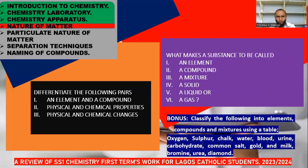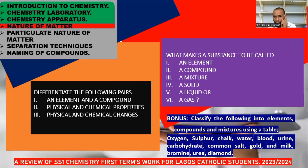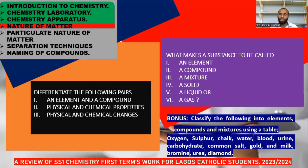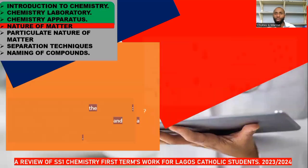Can you classify the following into elements, compounds, and mixtures using a table? Oxygen, sulfur, gold, bromine, and diamond are elements. Chalk, water, carbohydrate, common salt, and urea are compounds. Then the rest are rendered as mixtures. So be careful with what you see.